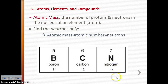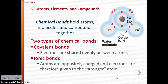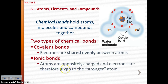We can't talk about atoms and chemistry without talking about the bonds that hold atoms, molecules, and compounds together — those are chemical bonds. There are two types: covalent bonds, where electrons are shared between atoms, and ionic bonds, where you have oppositely charged atoms bonded together and electrons are given to the stronger atom. The key word for covalent bonds is 'shared'; for ionic bonds, electrons are 'given.'